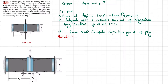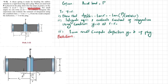Welcome back. Problem 3.32: a shear spring is made by bonding a rubber annulus to a rigid fixed ring and a plug. When an axial load P is placed on the plug, show that the slope at point y in the rubber is dy/dr = -tan(γ) = -tan(P / 2πhgr). For small angles, integrate this expression and evaluate the constant of integration using the condition y = 0 at r = r₀.